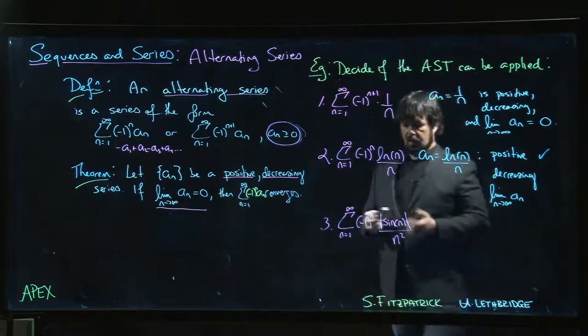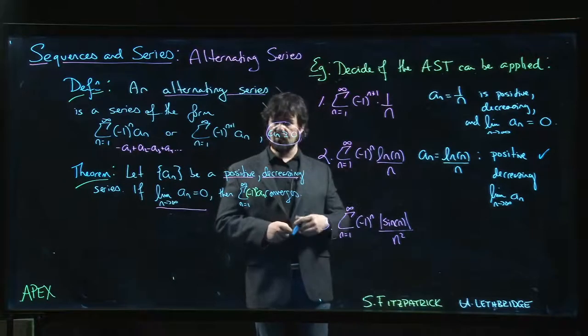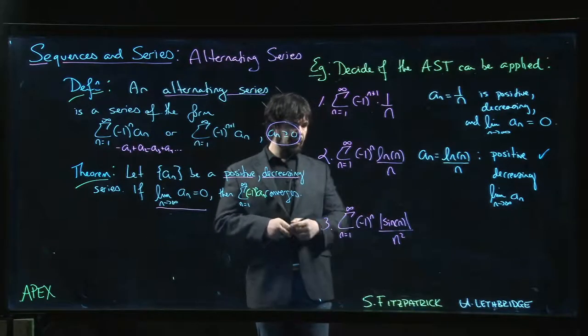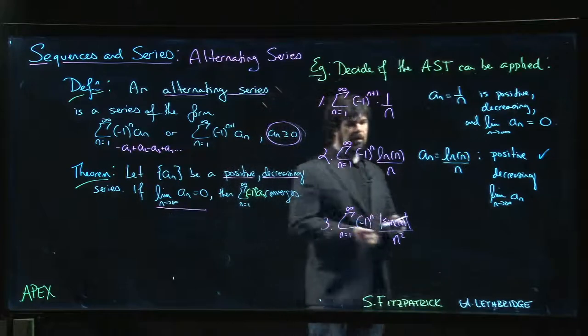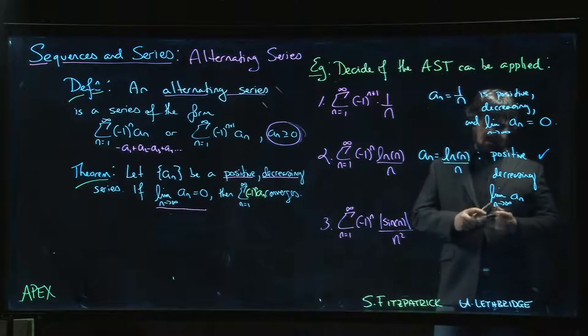What about decreasing? If you try the first couple values of n, you might find that it's going up, so you get a little bit worried. It's not decreasing, looks like the values are going up, can't apply the alternating series test. On the other hand, the limit is 0.